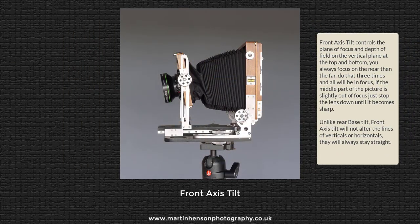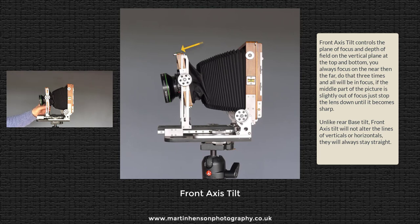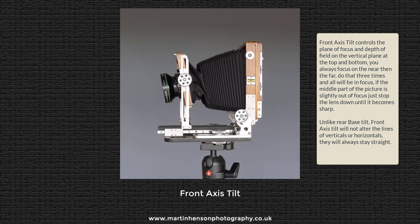To increase depth of field, we tilt the front standard downwards. The technique is to focus on the foreground, then tilt for the background, refocus the foreground, tilt for the background again, and repeat until both come into focus. I'd advise stopping down the lens a little, as the central area can go slightly soft. But wide open, you can get foreground to infinity in focus. Those are two ways of increasing depth of field with a field camera.